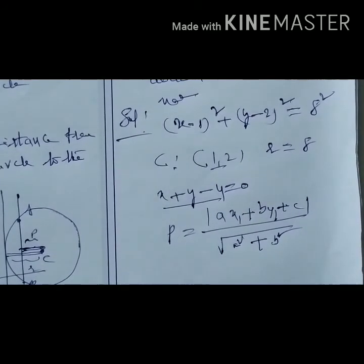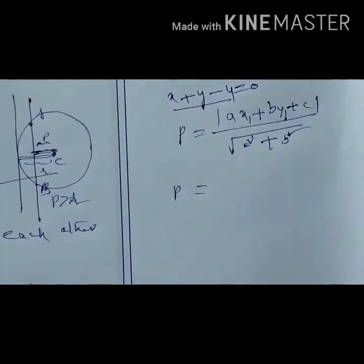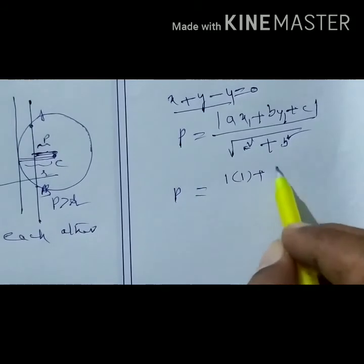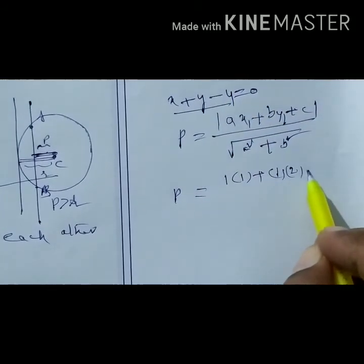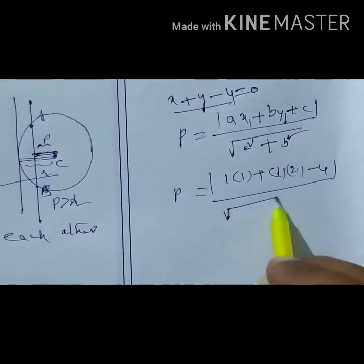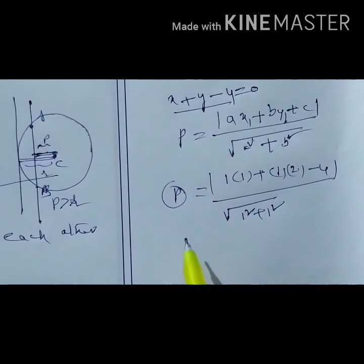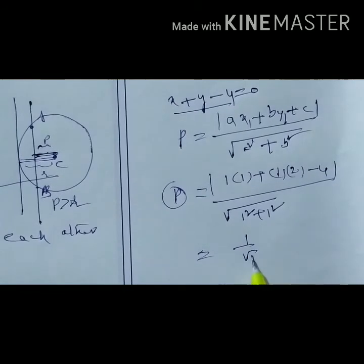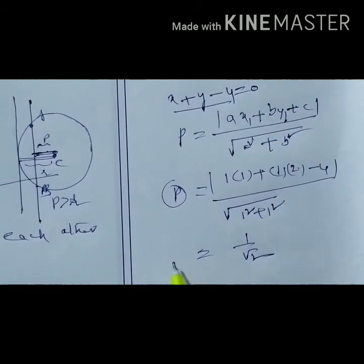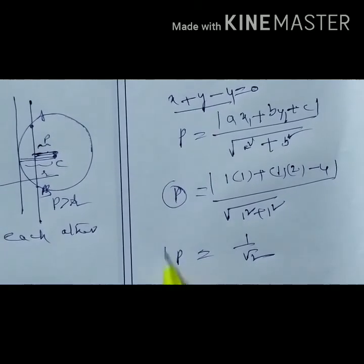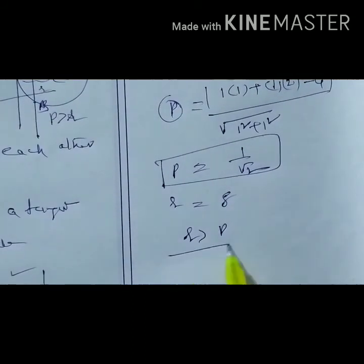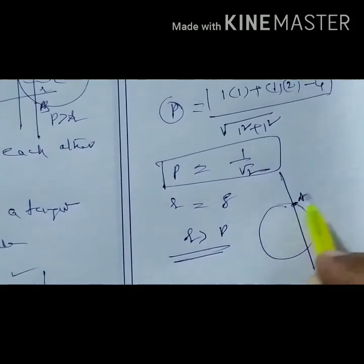The perpendicular distance p = |1(1) + 1(2) − 4| / √(1² + 1²) = |1 + 2 − 4| / √2 = |−1| / √2 = 1/√2. The radius r = 8. Clearly, r is greater than p. Therefore, the line intersects the circle in two distinct points.